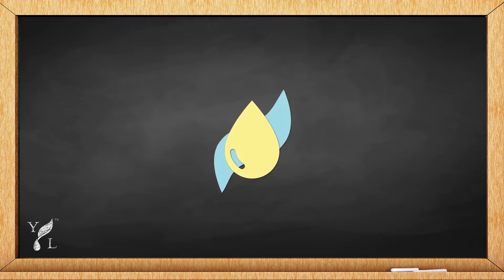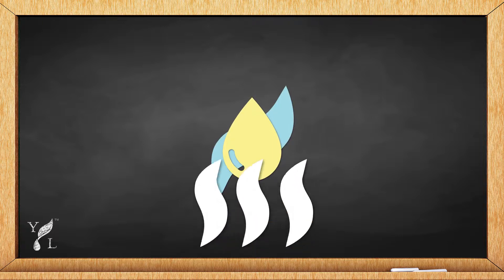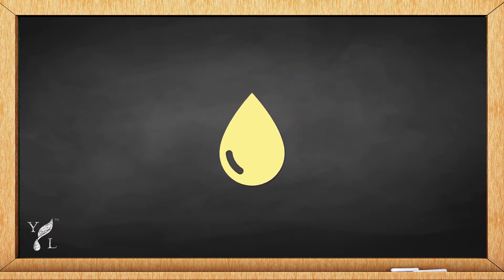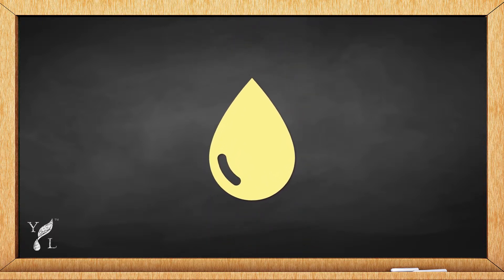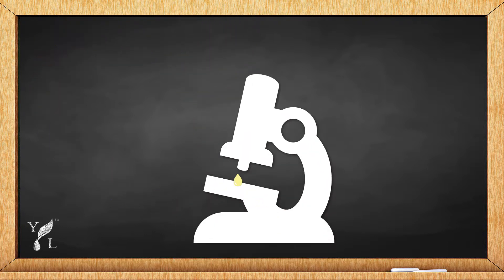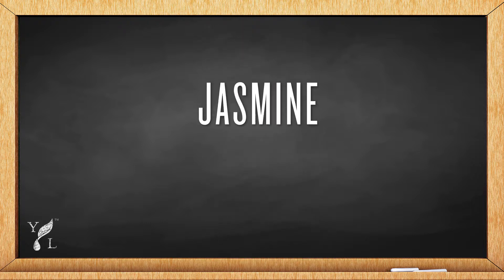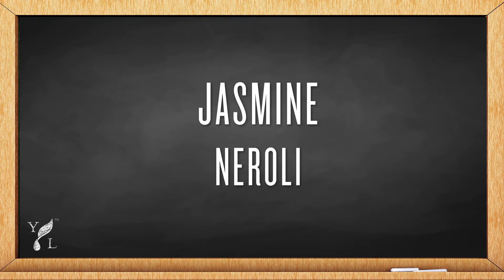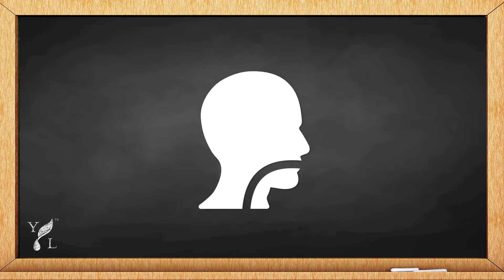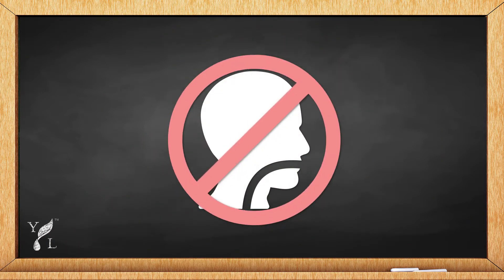Then, in order to separate the solvent from the essential oil, a second extraction uses steam to recover the solvent and produce the final absolute oil. The absolute oil is then collected and sent to our laboratory for testing. Absolute oil extraction is only used for jasmine and neroli essential oil. It's important to note that a trace residue of the solvent may be left behind, so ingestion of these oils is not recommended.